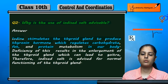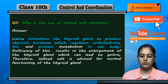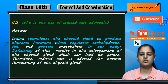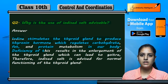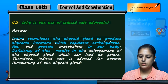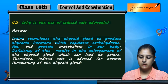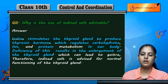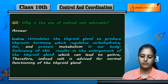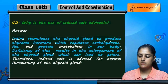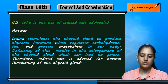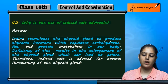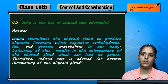If thyroxin hormone is not secreted properly, a deficiency occurs — both of thyroxin and of iodine. Due to this deficiency, the thyroid gland becomes enlarged, resulting in a disease that is called goiter.